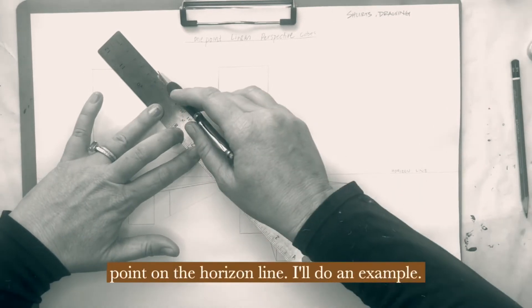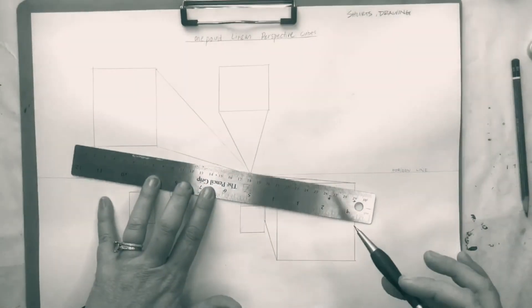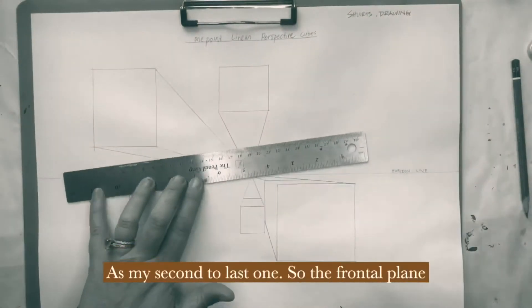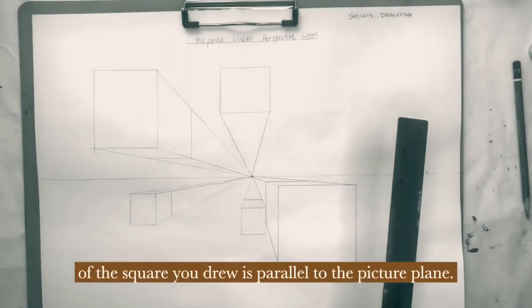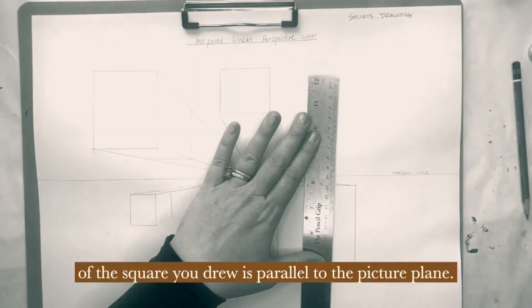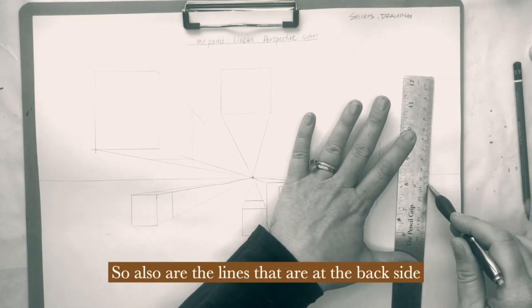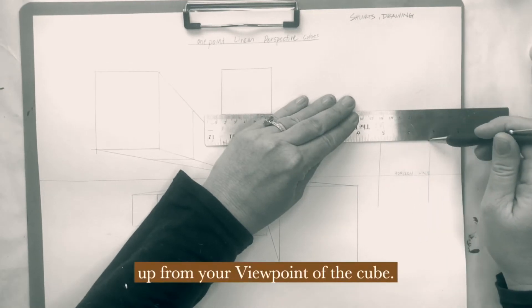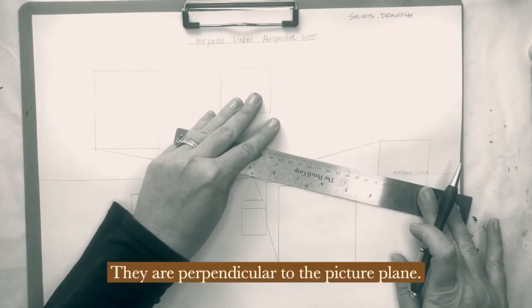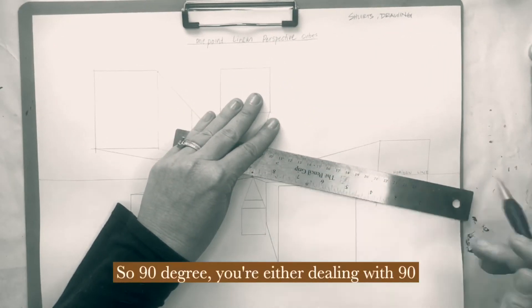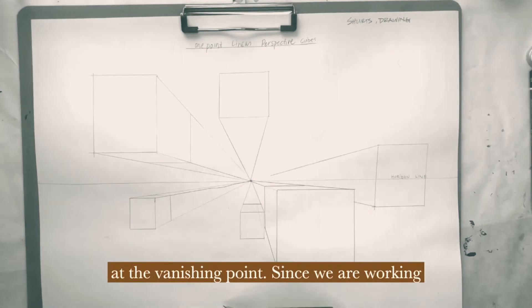I'll do an example as my second to last one. So the frontal plane of the square you drew is parallel to the picture plane. So also are the lines that are at the back side, from your viewpoint, of the cube. They are perpendicular to the picture plane. So 90 degree. You're either dealing with 90 degree angles or orthogonal lines that end at the vanishing point. Since we are working only in one-point perspective.